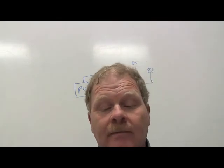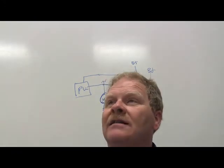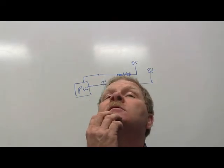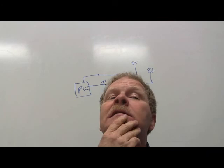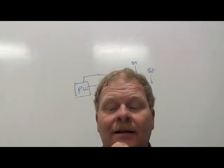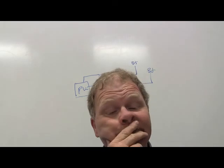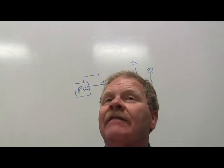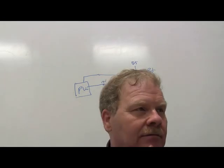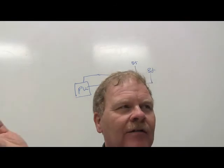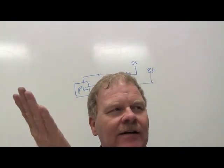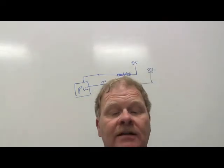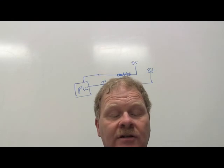Describe a thermistor. It's a thermal resistor — a solid-state variable resistor that reacts to heat. We use it for things like an air temperature sensor. If it's negative temperature coefficient, it gets less resistance when hot. If it's positive temperature coefficient, it gets more resistance when hot. Most of the time on computer systems you'll use negative temperature coefficient thermistors.